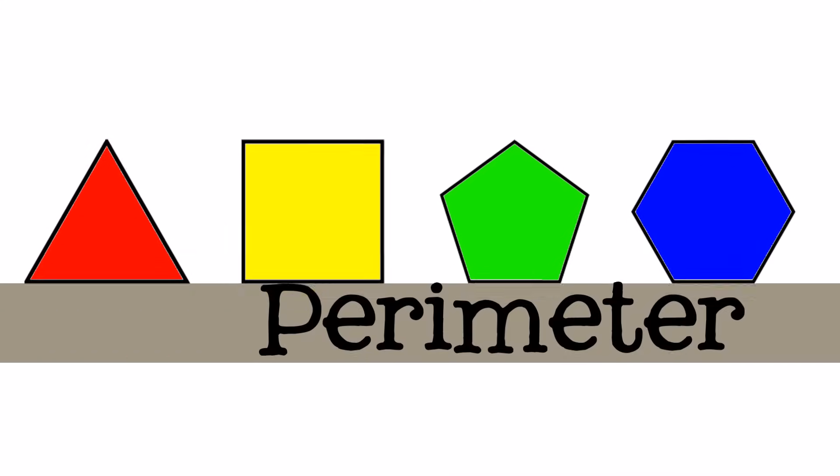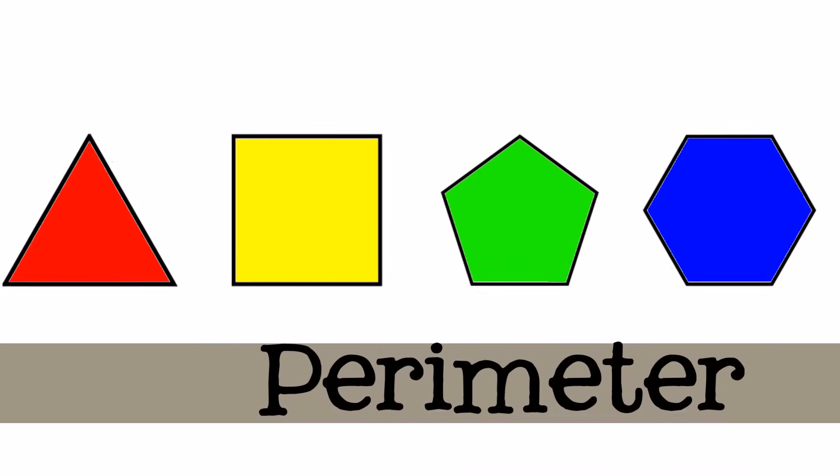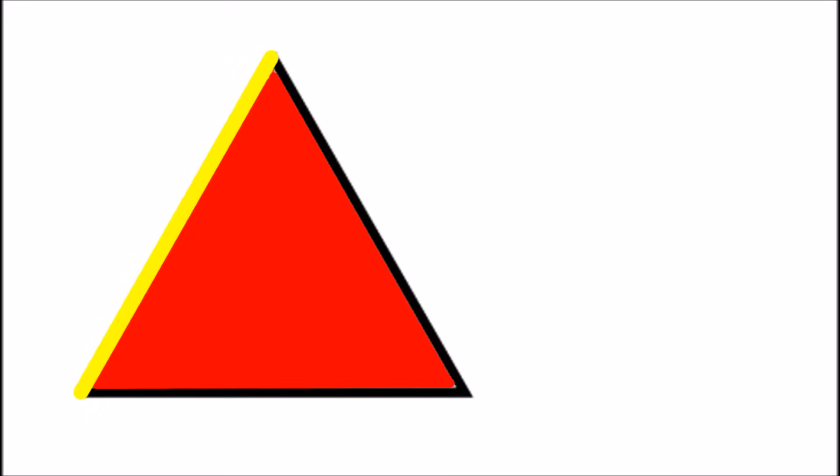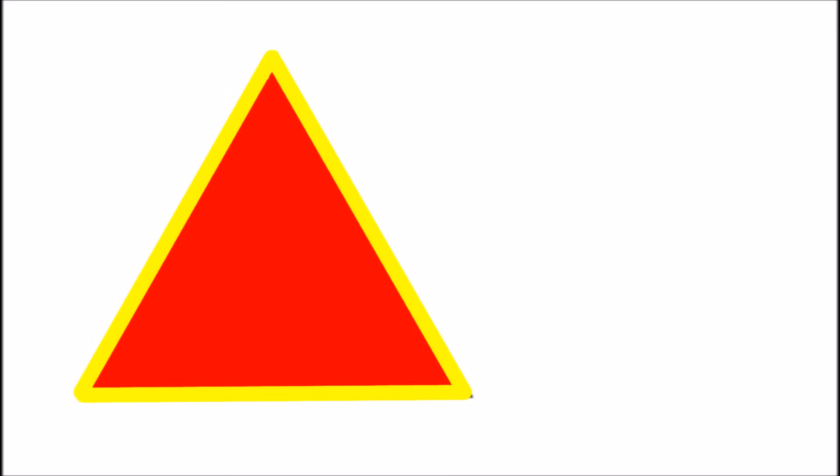Hi everyone! Today we're going to talk about perimeter. Perimeter is the distance around an object. We can calculate perimeter by adding together the length of all the sides of the object.